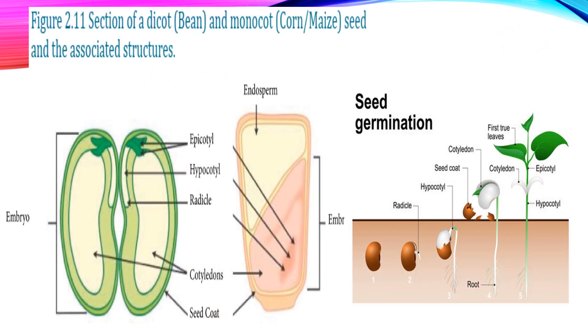Figure 2 shows the sections of dicots and monocots, for example. In the monocot we have corn as an example, and the diagram shows the different parts to identify.